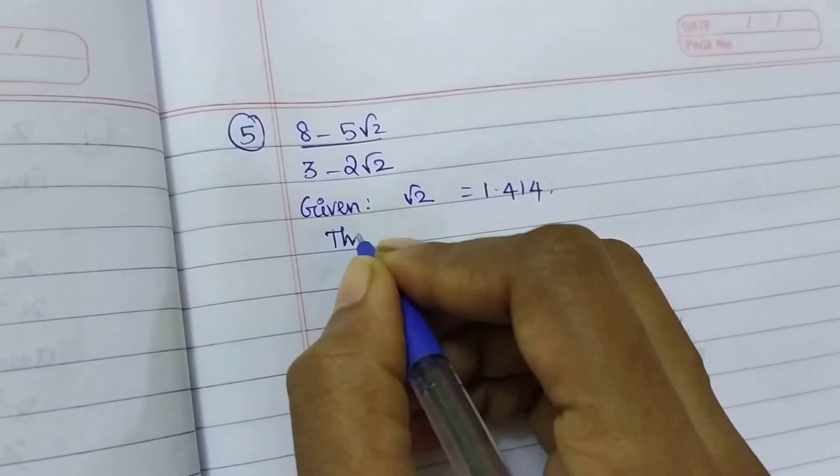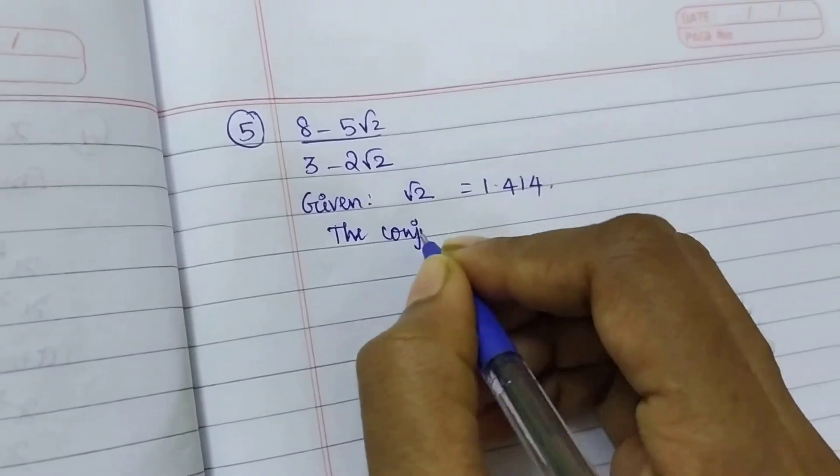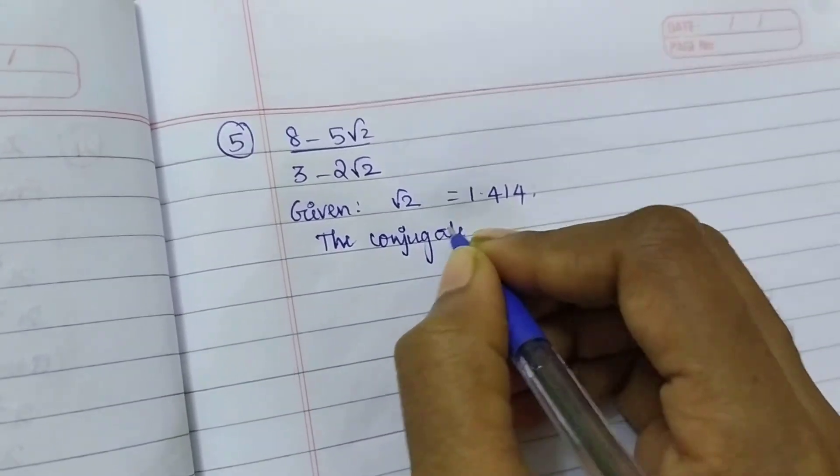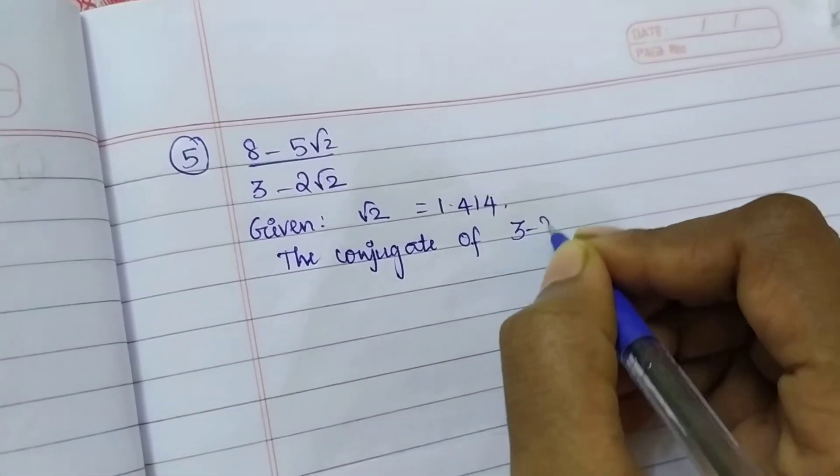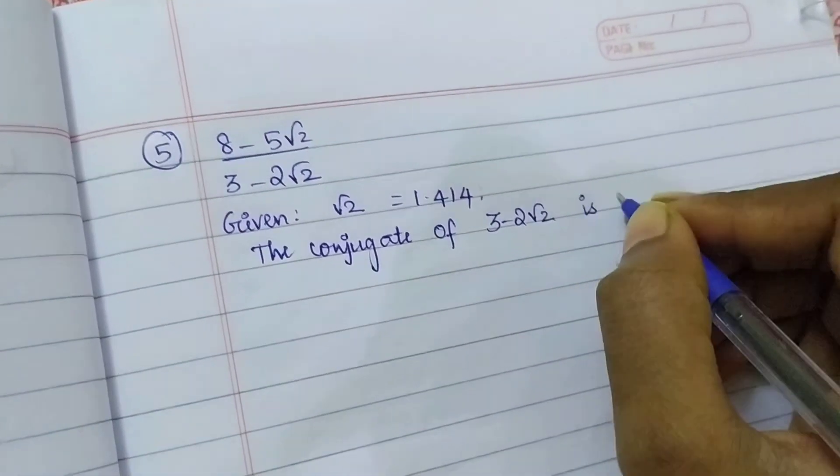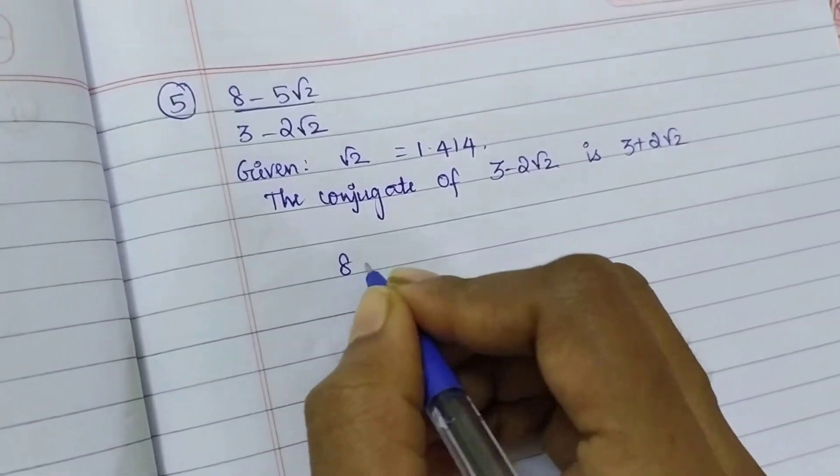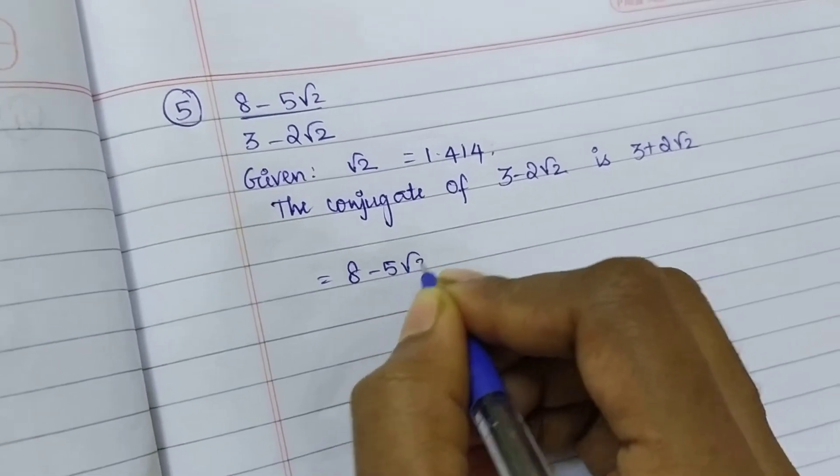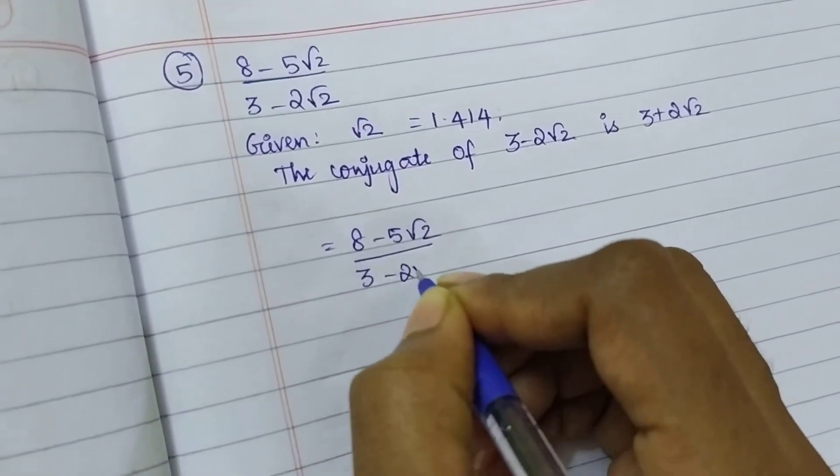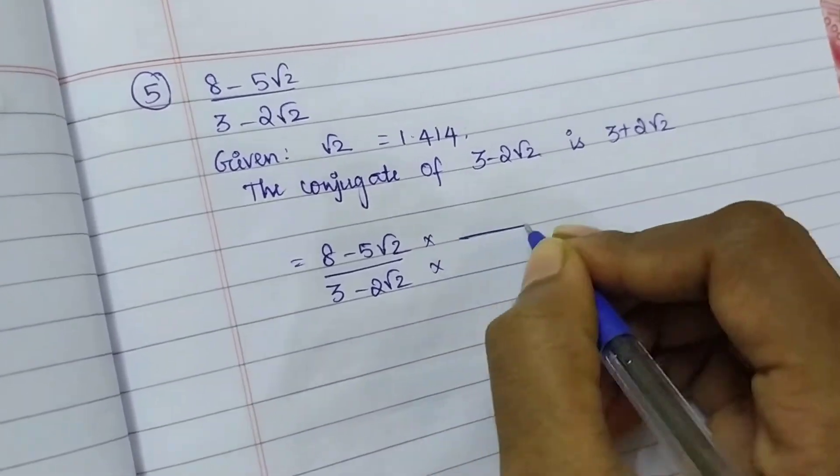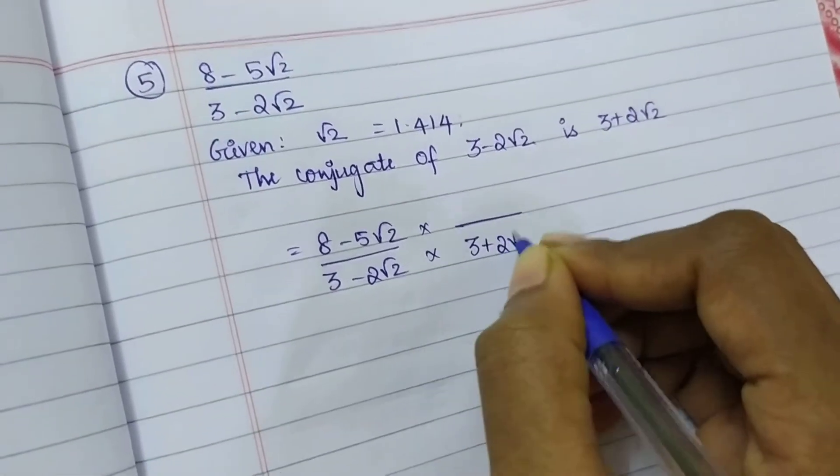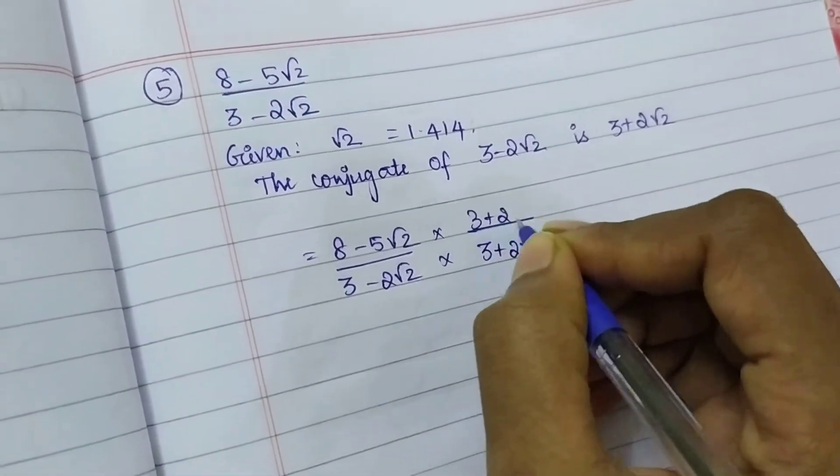So the conjugate of the given, conjugate of 3 minus 2 root 2 is 3 plus 2 root 2. So, 8 minus 5 root 2 plus 3 minus 2 root 2. What is the value? 3 plus 2 root 2, 3 plus 2 root 2.